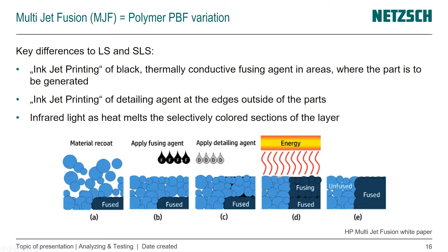The fusing agent is black and thermally conductive, and is applied where the powder is supposed to be melting. The detailing agent is applied right next to it at the edges where the part isn't supposed to fuse. Here we see the gray detailing agent and the black fusing agent.